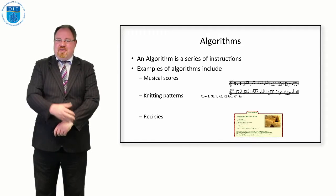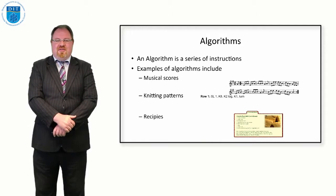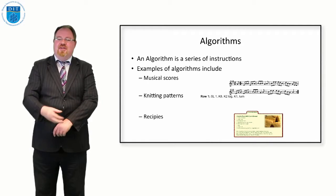It doesn't knit the clothes for us, but it tells us how to knit the clothes. If you look at a recipe, the recipe doesn't cook the food for you, but it tells you how to cook the food. So an algorithm is the design of the system, but not the system itself.